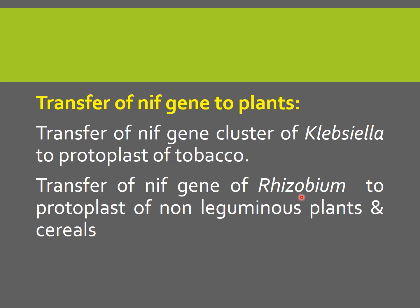Many attempts have been made to introduce NIF genes into eukaryotic cells. But unlike prokaryotes, eukaryotes have monocistronic mRNAs with a ribosome binding site at the 5' end. So if NIF genes from prokaryotes are to be expressed in plant cells, it is necessary to fuse the coding sequence of each gene to a eukaryotic promoter so that it produces a suitable ribosome binding site at the 5' end. These challenges are the reasons why it is difficult to engineer plant cells with the NIF gene cluster, but studies are ongoing.